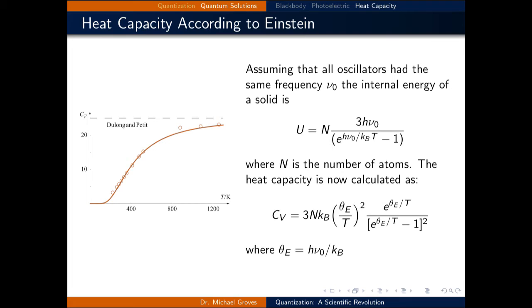Now, taking the derivative of this, we can find the heat capacity, and it is now calculated as 3NkB times (θE/T)² multiplied by e^(θE/T) divided by [e^(θE/T) - 1]². This is where the definition for θE is hν₀/kB. We're just grouping together some constants into this value.